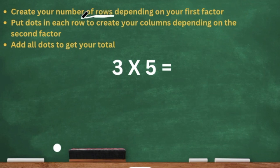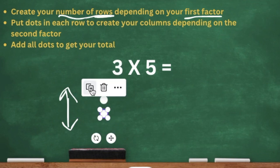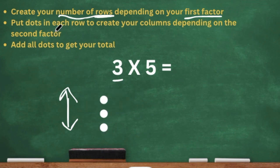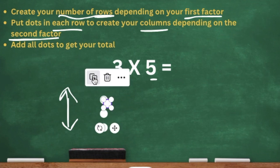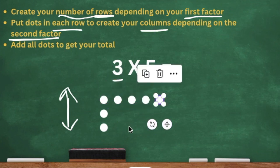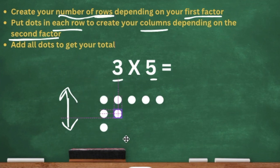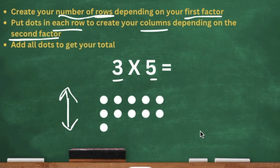We are going to create our rows using our first factor, which is three. The rows go up and down, so I'll start with my first dot: one, two, and three. Now I have to put dots inside each row to create my columns, and I look at the second factor, which is five. So each row is going to have five dots. That's two, three, four, five in the first row. Then two, three, four, and five in the second row.